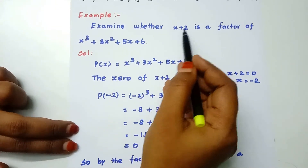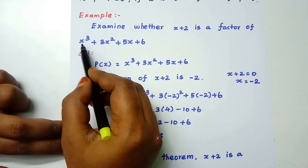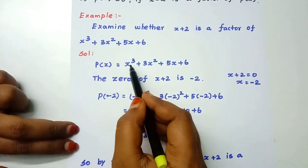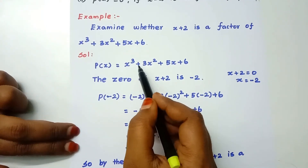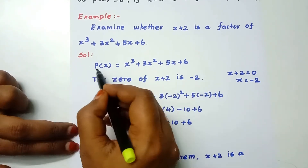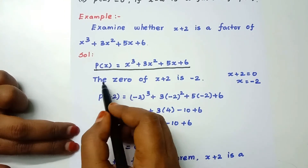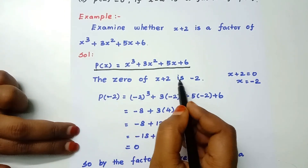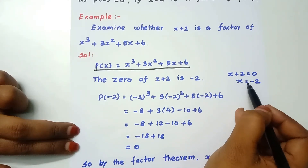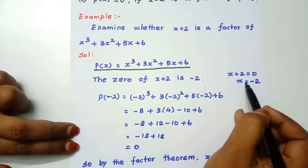We need to check if x plus 2 is a factor. Let P(x) equal x cubed plus 3x squared plus 5x plus 6. The value of x plus 2 equals 0 gives x equals minus 2.